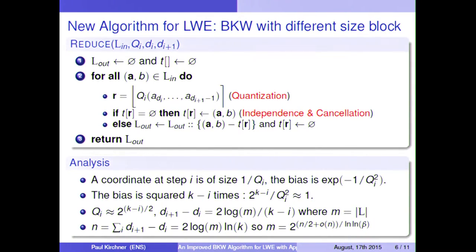In this case, we have a complexity which is linear in the size of the list, or polynomial. And so the final result is that the running time is 2 to the n over 2 divided by log log beta, which is sub-exponential for even small beta.